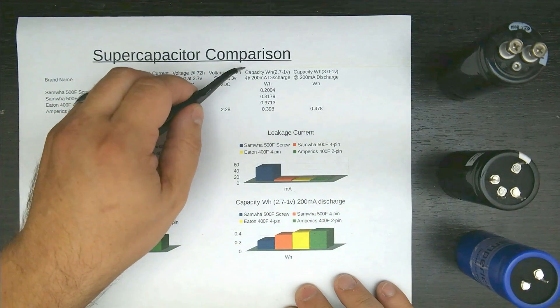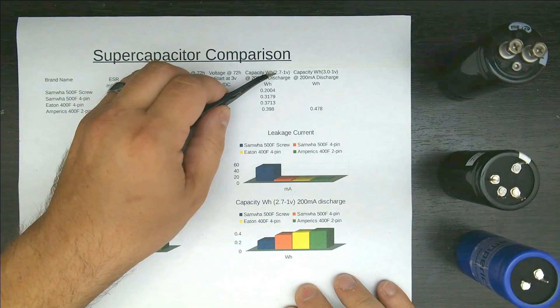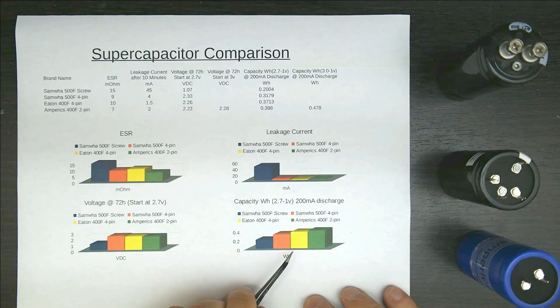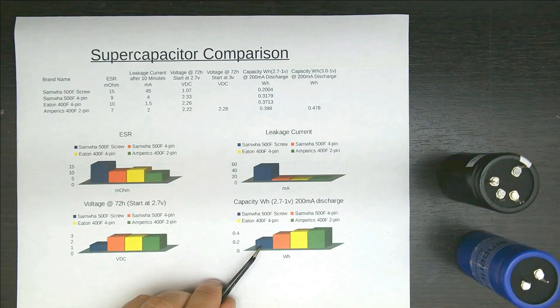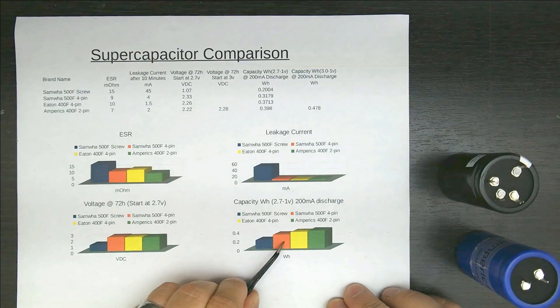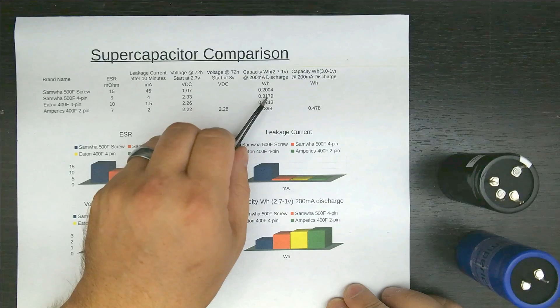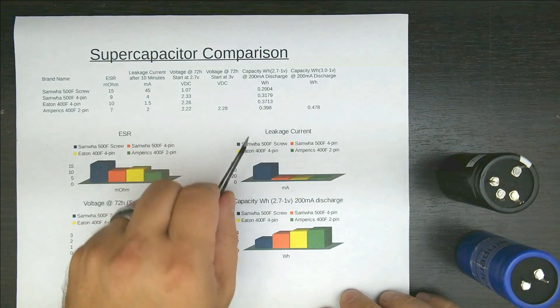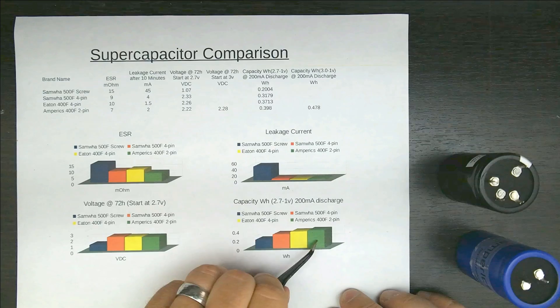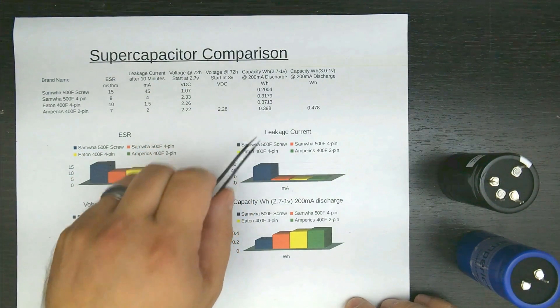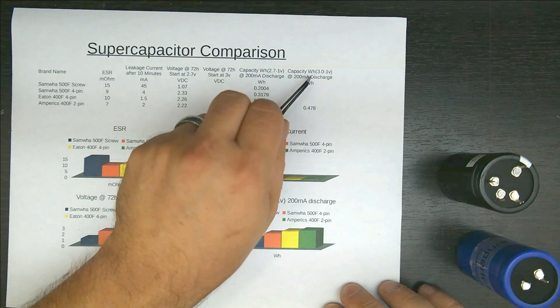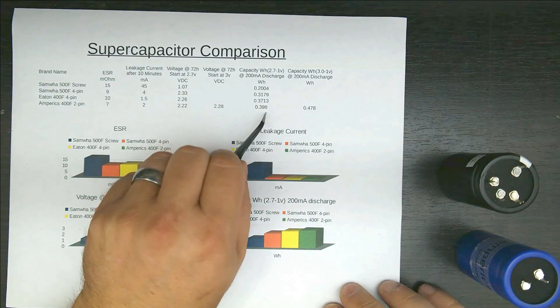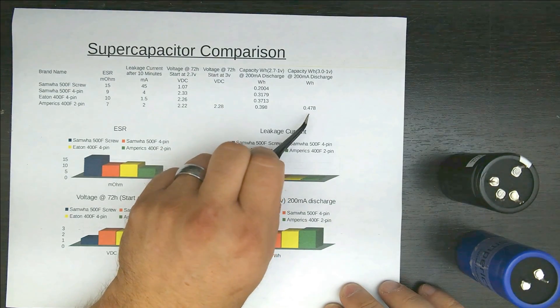But we'll also see here the capacity. Now this is in watt hours starting at 2.7 volts and discharging down to 1 volt at a 200 milliamp constant current discharge. Again, yep, there's the crap cap blue. Yeah, forget it. Jump. Ooh, that probably hurt. Second one is Samwa 500 farad 4-pin. That came out at 0.3179 watt hours. And next one, 3719. Wow, that almost got me. And finally, the Amprix actually came out the best at 0.398 watt hours at 2.7. So I also redid this test again for the three volts. So I did three volt down to one volt discharge at 200 milliamps. And if you're using that extra bit, it definitely helps a lot. It's almost half a watt hour, but it will apparently bleed off a little faster.